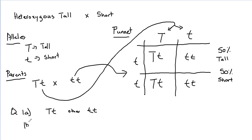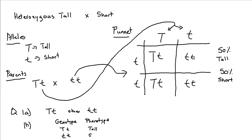Question 1b was to list all the possible offspring — genotype and phenotype. We've got two possible genotypes: the offspring are either heterozygous (Tt) or homozygous recessive (tt). Half of them are going to be tall, and half of them are going to be short. All of those tall offspring are heterozygous tall — none of them are purebred tall. We've now gone through a genetics problem-solving question using the technique of: figure out alleles, figure out parents, do the Punnett square, and then answer the question.